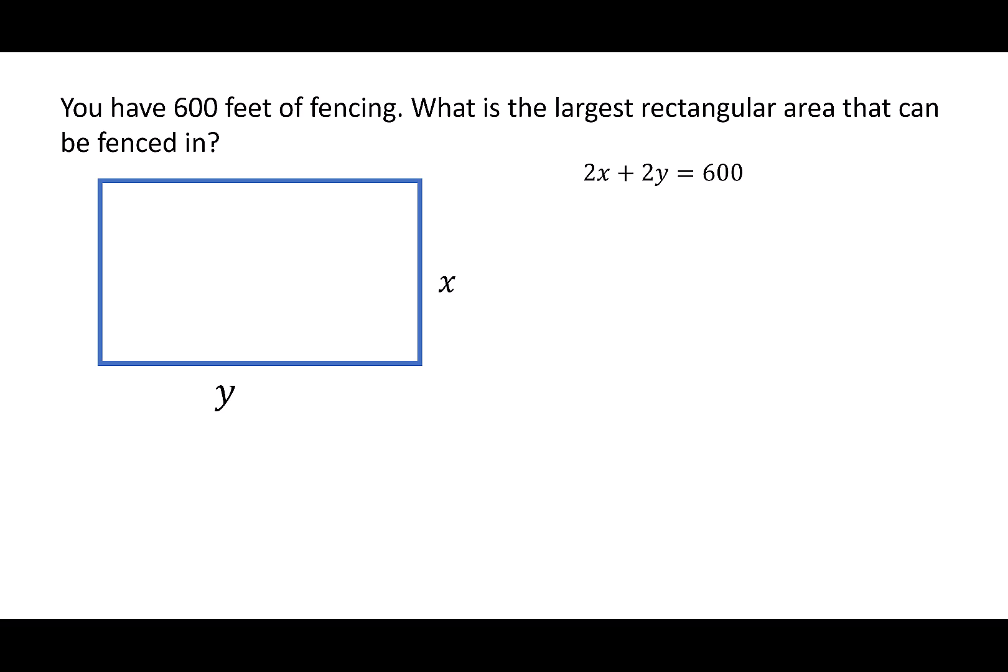I don't really want to have two variables. I only want to have one. I'm going to solve this equation for y. That says 2y = 600 - 2x, then y = 300 - x, and I'll put that back over on my rectangle.